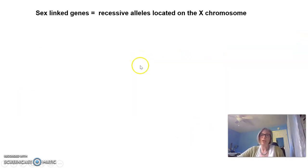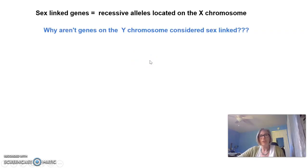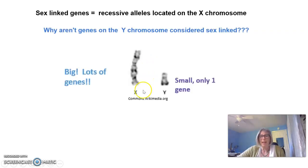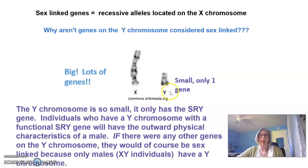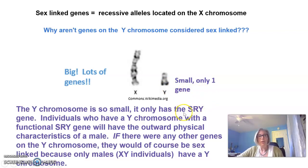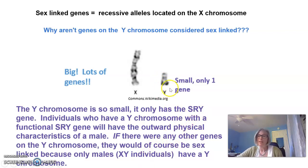Why aren't genes on the Y chromosome considered sex-linked? It has to do with size and how many genes can fit on a chromosome. The Y chromosome is really small — it actually only has one gene on it, called the SRY gene. Individuals who have a Y chromosome with a functional SRY gene will have the outward physical characteristics of a male. If there were any other genes on the Y chromosome they would be sex-linked, but there aren't, so we only talk about sex-linked genes as recessive alleles on the X chromosome.